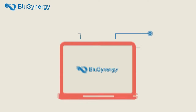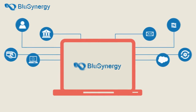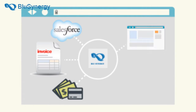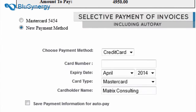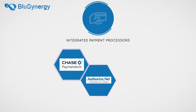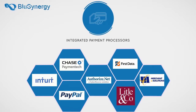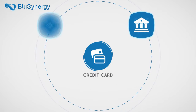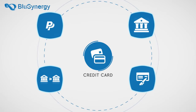Blue Synergy's payment module may be configured to automatically charge your customers, or allow them to make payments on your website, or synchronize payments from other systems like QuickBooks or NetSuite. Blue Synergy integrates with leading payment processors so that you can accept payments via credit cards, ACH, and PayPal, as well as offline remittances like checks and wires.